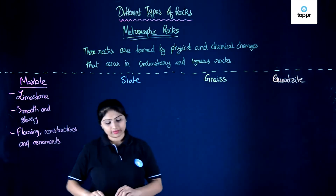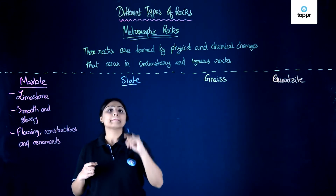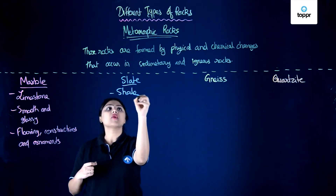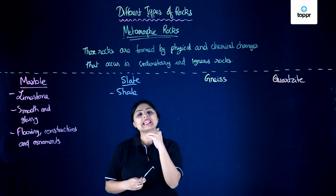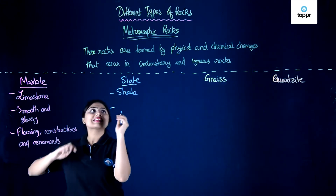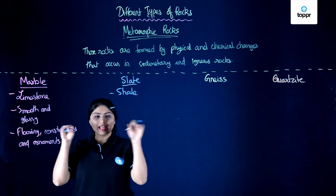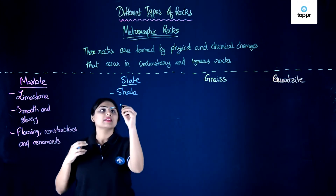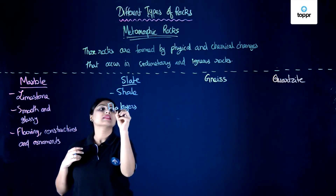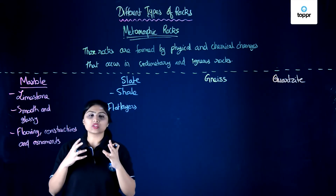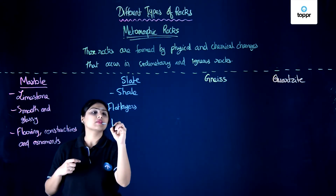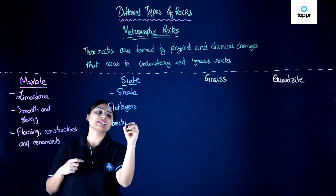Next is slate. Slate is formed from a sedimentary rock called shale, which is formed by solidified clay. When changes occur in shale, slate is formed. Slate looks like flat layers, similar to shale. Slate is used for making bricks and cement.